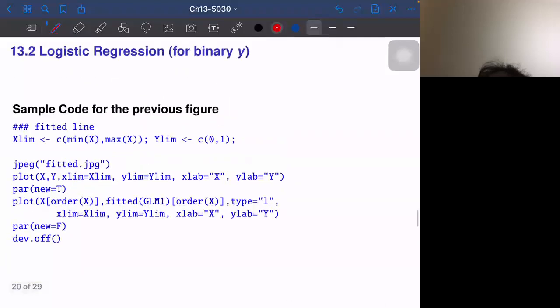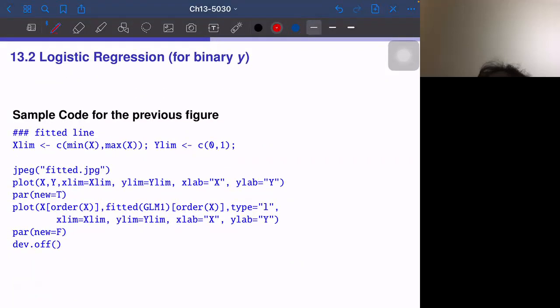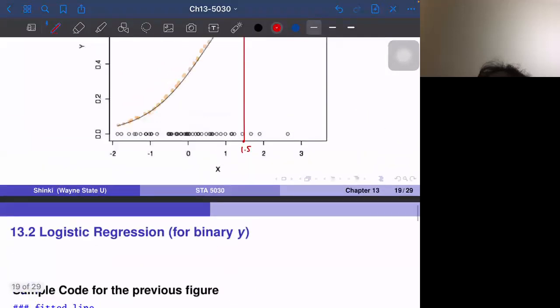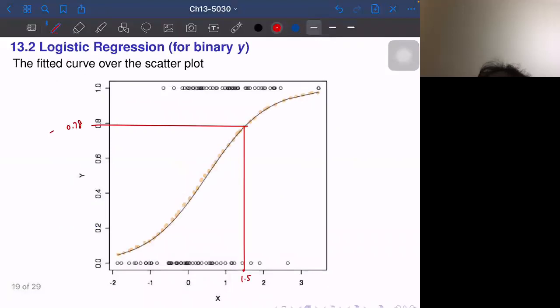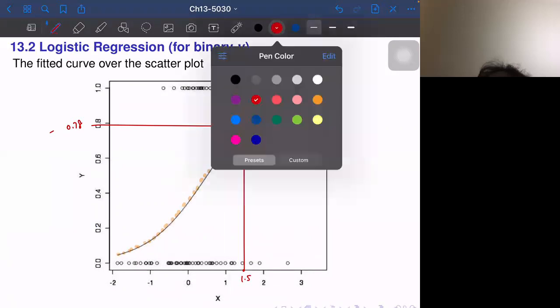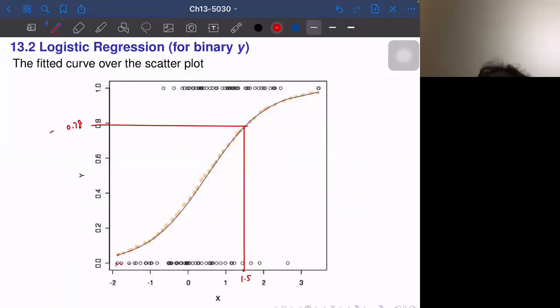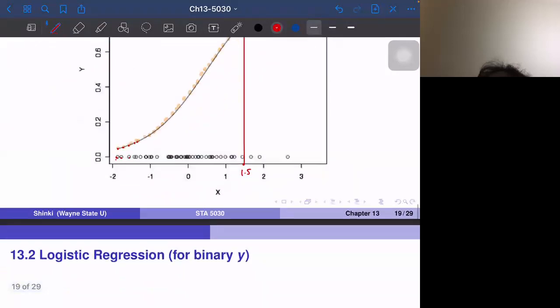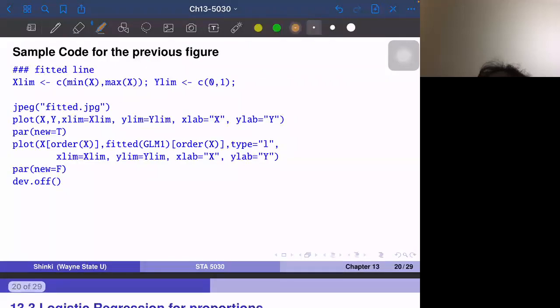This is the code to generate the previous figure. We use the fitted value to generate this. It looks like a smooth curve, but we actually plot 100 points. For each observed X value, we calculated the fitted probability and connected these 100 points. We use the fitted value of GLM one, but the important thing is we have to order it by order of X values.